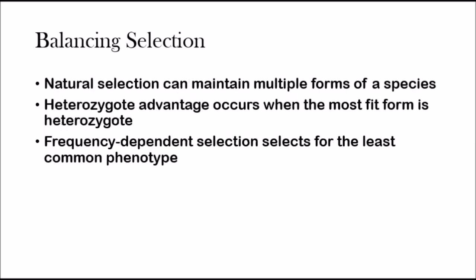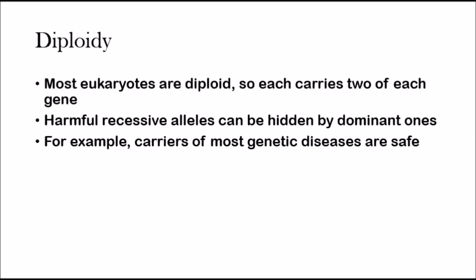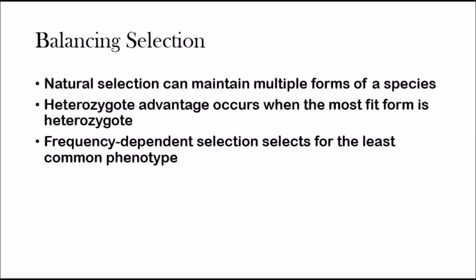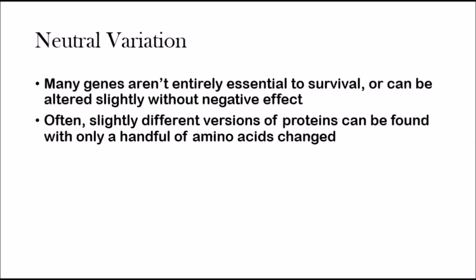Just to recap: diploidy means that since there are two copies of the allele, one can present itself if natural selection selects against the other. Balancing selection — heterozygous advantage means there's a dominant and recessive allele, so two different alleles are maintained. Frequency-dependent selection means natural selection won't allow too much of one allele to dominate. And neutral variation is when genes exist without a negative effect.